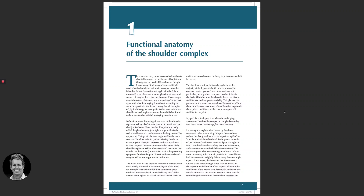Hello and welcome to your first lesson for the Vital Shoulder Complex course. My name is John Gibbons and I will be your tutor throughout this course. We're going to start with the first lesson on functional anatomy of the shoulder joint. Anatomy is one of the most important lessons you will learn, and throughout this course there are 18 lessons, but you should spend a bit more time on lessons 1 and 2.